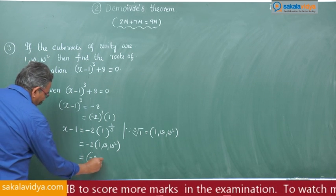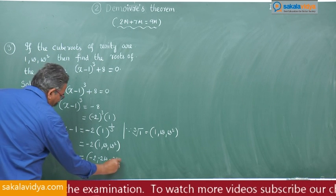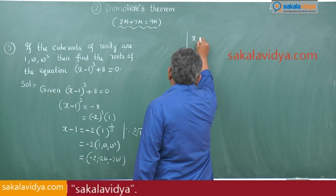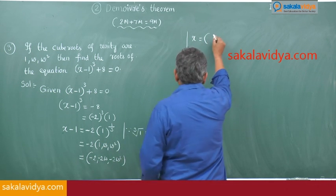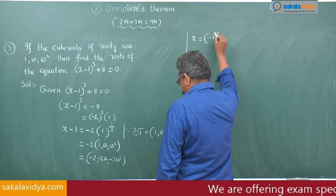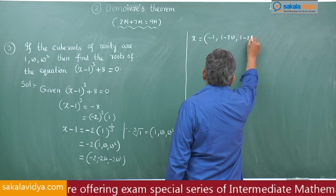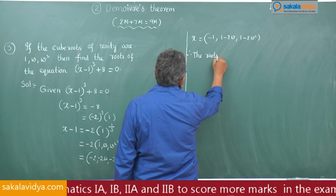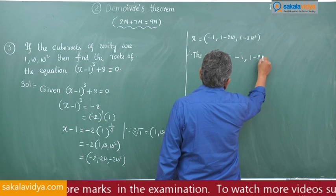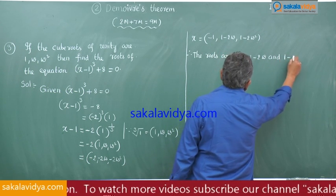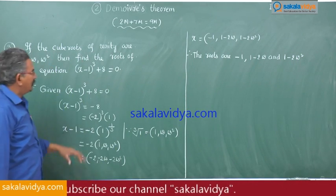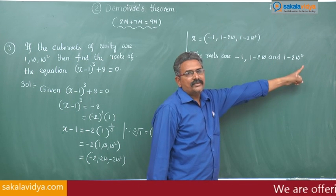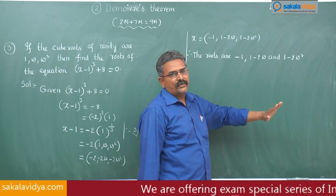This gives x minus 1 equal to -2, -2·omega, or -2·omega squared. Therefore, x is equal to 1 minus 2, or 1 minus 2·omega, or 1 minus 2·omega squared. The roots of (x-1)³ + 8 = 0 are -1, 1 minus 2·omega, and 1 minus 2·omega squared, where 1, omega, omega squared are the cube roots of unity.